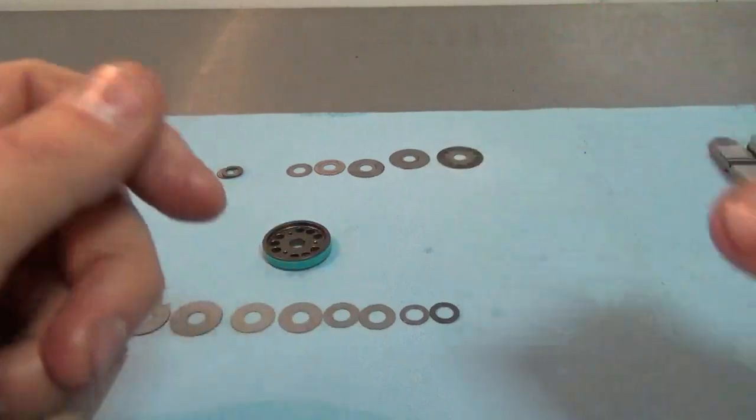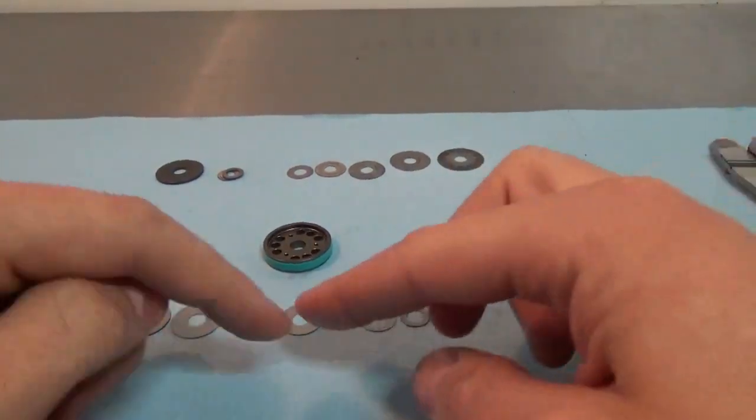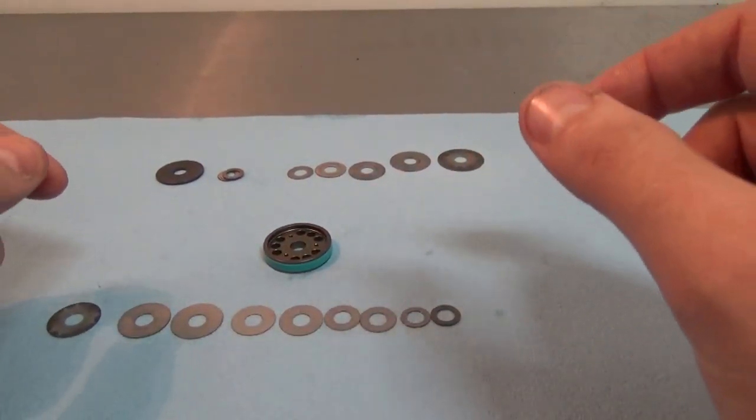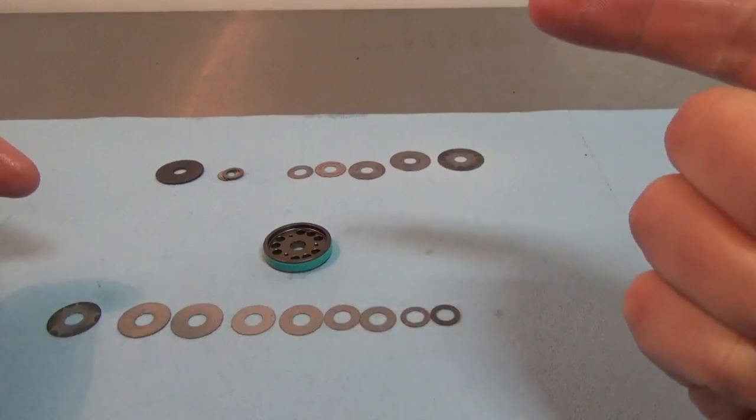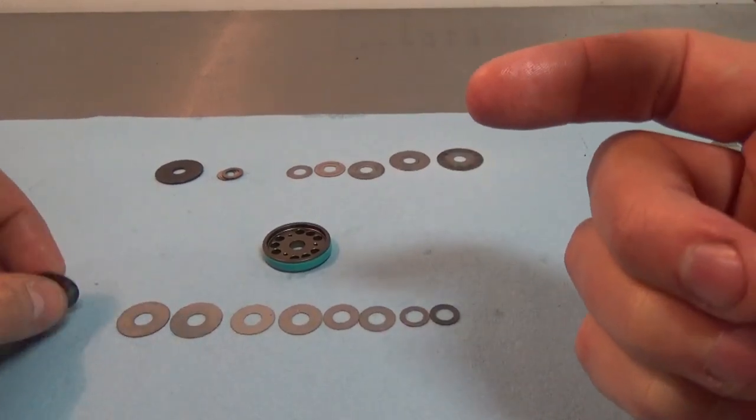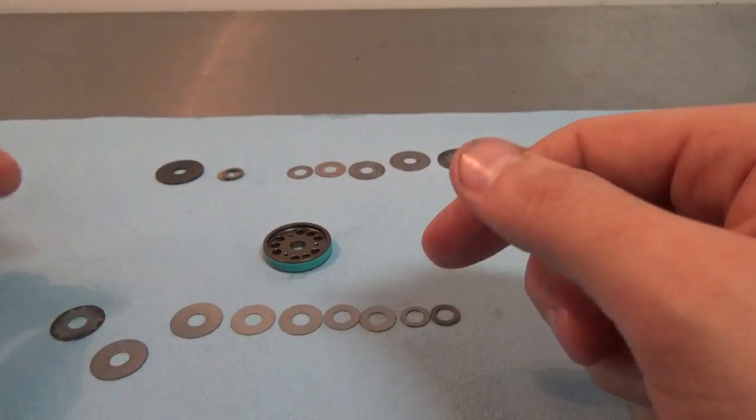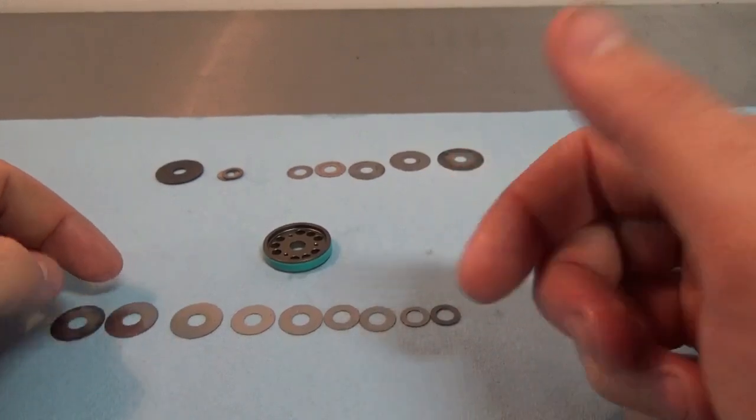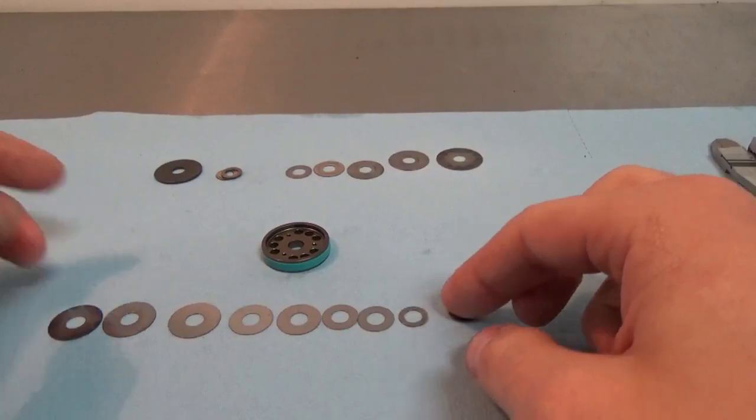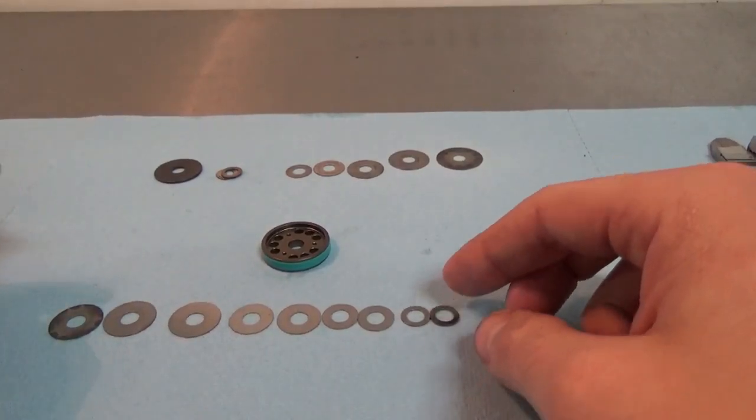So big advantage of shim stacks is when this whole stack is assembled, it's only a couple of millimeters high. It's tiny. It's very compact. They're very tunable because as you can see, each one of these shims you can swap out for something different in terms of thickness, diameter, or alternatively you can alter the clamping diameter.